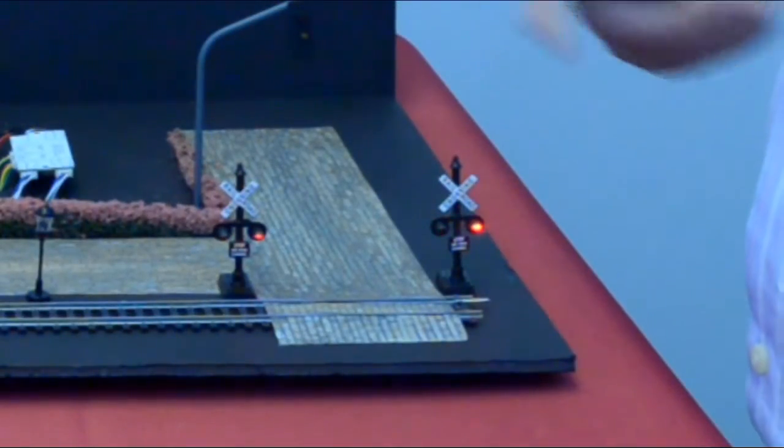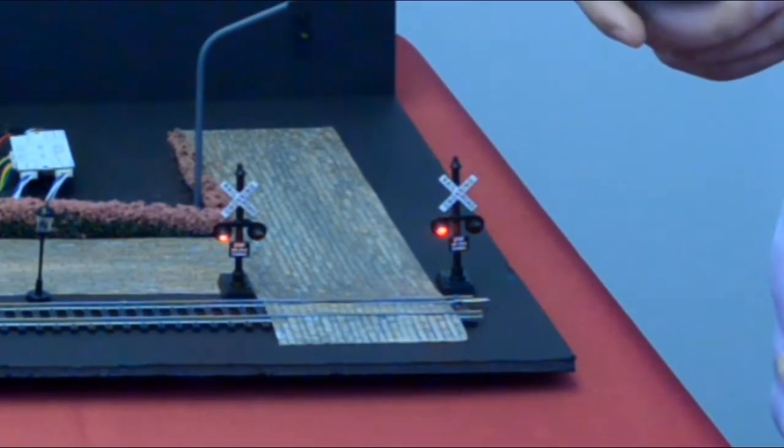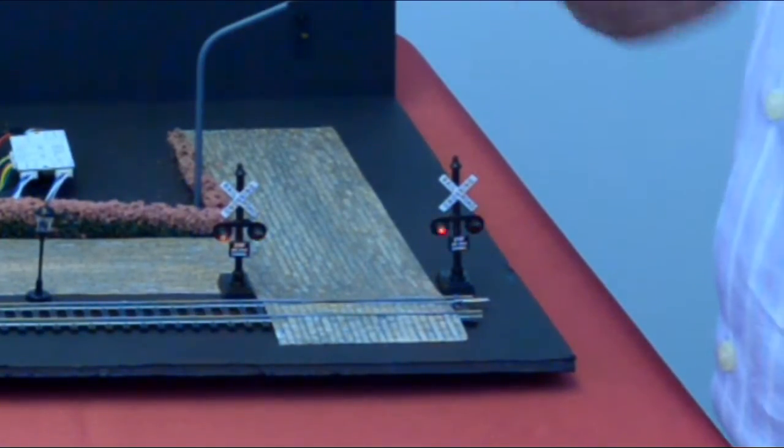On another output, we can turn on crossing signals, alternating flashing. Now, is that a prototype of the speed? It seems to be a little bit slower, but that's because we've played around with the speed.